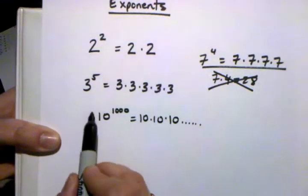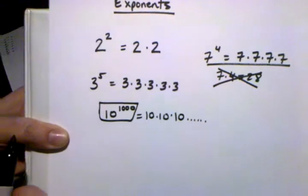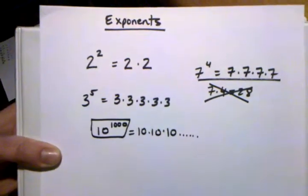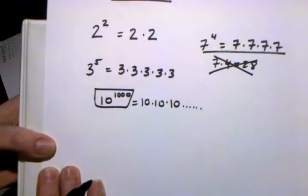It's just a nice pretty way, a nice short way of writing out either big or small numbers, or a shortcut to saying how many times you're going to multiply the same number over and over again. So that's the gist of what an exponent is.